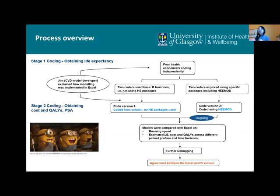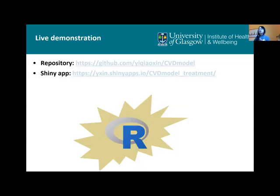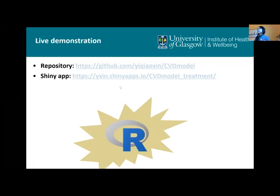In the end, with the correct R version, we developed a Shiny app of the Scottish CVD model. I'll show you the Shiny app so you can get a flavor of what this model is. The code for the model and the app is in the repository, so you can download it and try it yourself.